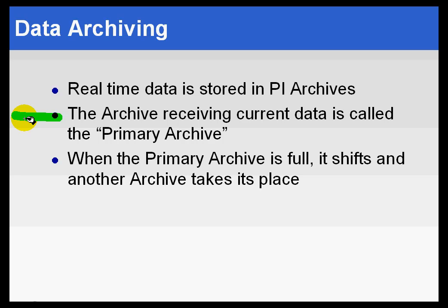The archive receiving the current data is called the primary archive — when we looked at this in the system management tools, it was listed as archive 0. When that primary archive is full, it shifts and another archive takes its place, becoming the primary archive. It's a shift in focus — we're not actually physically moving anything. We'll talk about that shifting algorithm in a few minutes.